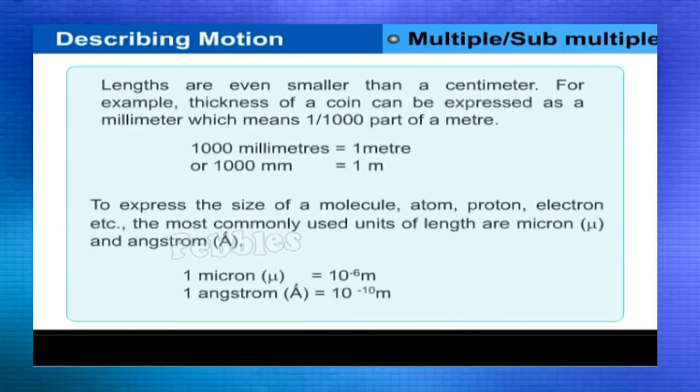Lengths are even smaller than a centimeter. For example, thickness of a coin can be expressed as a millimeter, which means one by one thousandth part of a meter. One thousand millimeters is equal to one meter, or 1000 mm = 1 m.